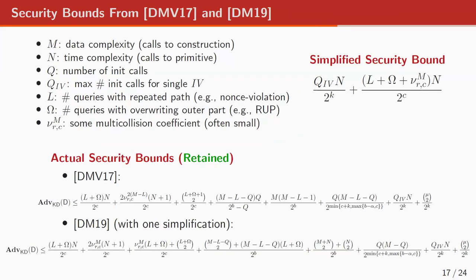The security bounds in these papers are very complex because they cover many use cases — M, N, Q, Q_IV, L, and omega differ based on use cases. But the general bound is very large. If you go for specific use cases, in many cases omega is zero, L can be zero, and then the bound simplifies a lot.